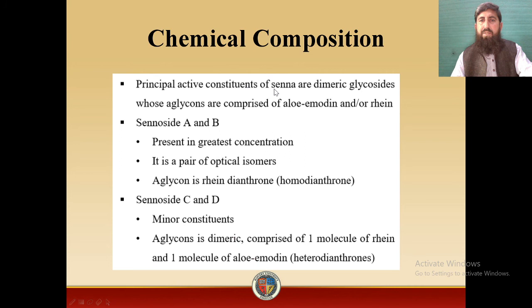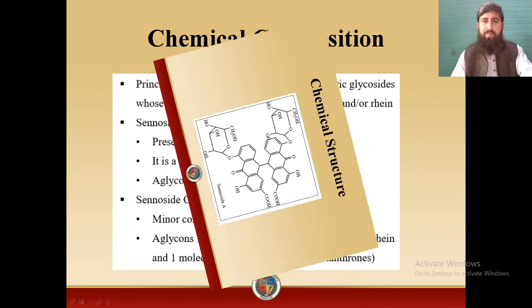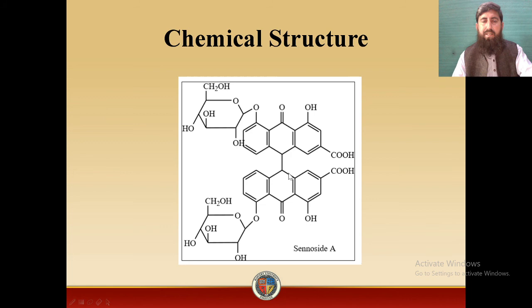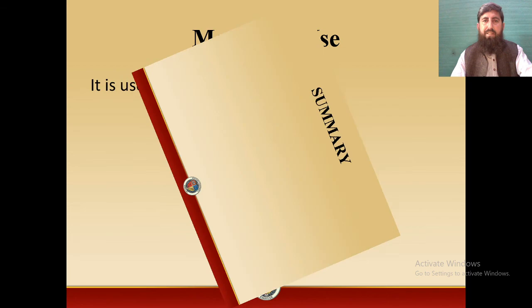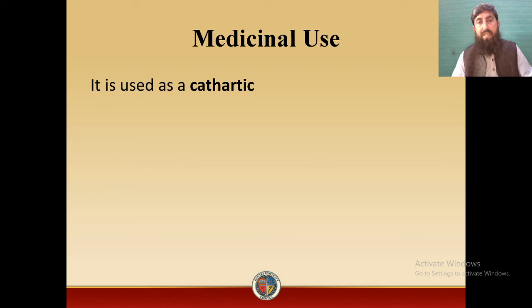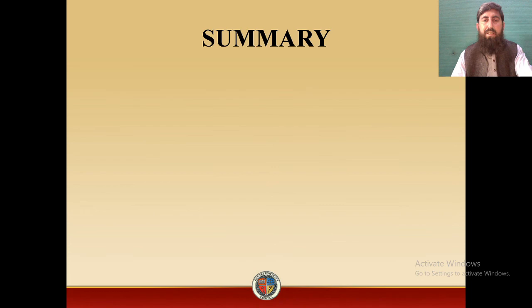Chemical composition of Senna: the principal active components are dimeric glycosides whose aglycones are comprised of aloe-emodin or rhein. Sennoside A and B are present in greatest concentration — they are a pair of optical isomers whose aglycone is rhein dianthrone, making them homo-dianthrones. Sennoside C and D are minor constituents whose aglycone is a dimer comprising one molecule of rhein and one molecule of aloe-emodin — making them heterodianthrones. Senna is used as a cathartic agent.